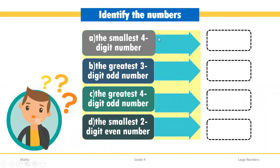Now you have to identify the number. Let's start with the smallest four-digit number. When writing the smallest four-digit number, at the starting place you will write 1, and the next remaining three digits will be zeros. So the smallest four-digit number is 1000.